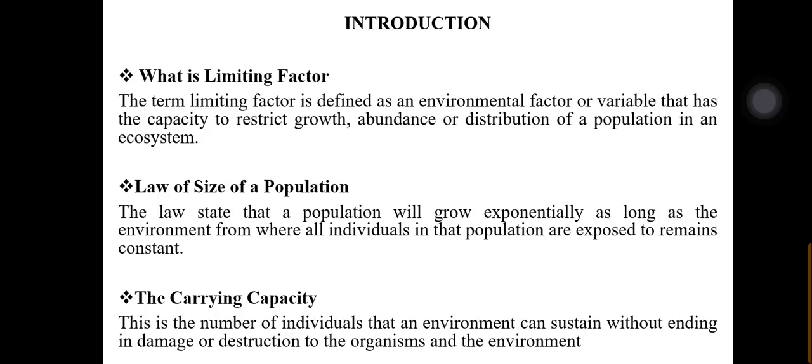Because limiting factors are present in limited supply, organisms tend to compete for their limited availability in the ecosystem. For example, different limiting factors affect human beings — even within the same species, different persons have different limiting factors. Those from a poor family could have limiting factors such as inadequate cash to do certain things, go for vacation, and so on, which is not the same limiting factor for someone from a rich background.